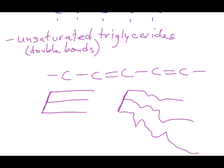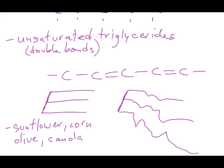Many plants, such as sunflower, corn, olive, and canola, produce large amounts of these unsaturated triglycerides. This is the reason why there are so many different types of oils we can use for cooking.